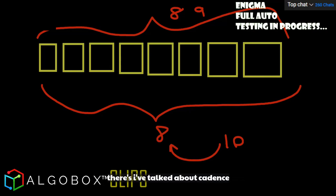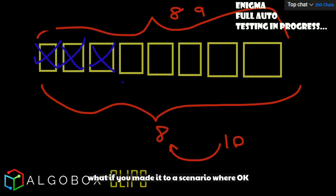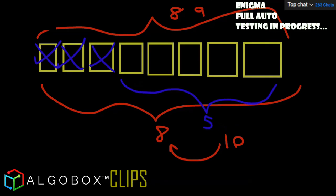Now how to avoid the death roll. I've talked about cadence. Easy ways to avoid a death roll: what if you could eliminate the first three of these? What if you made it to a scenario where max losers in a row was five? How would you do that? If you've watched my cadence videos you would understand there's a simplified way to do that.